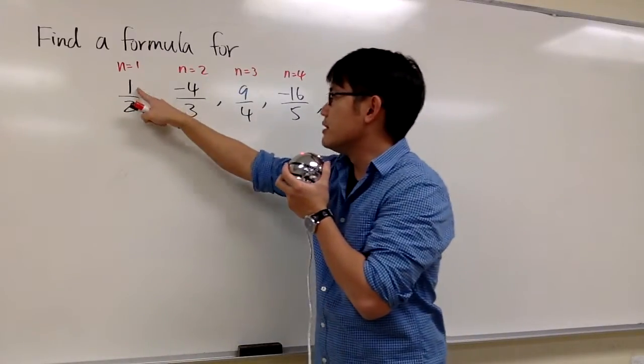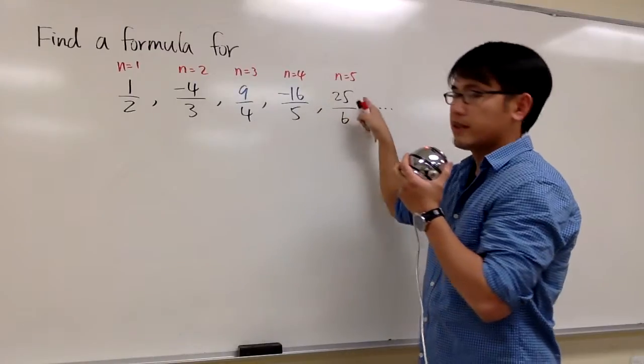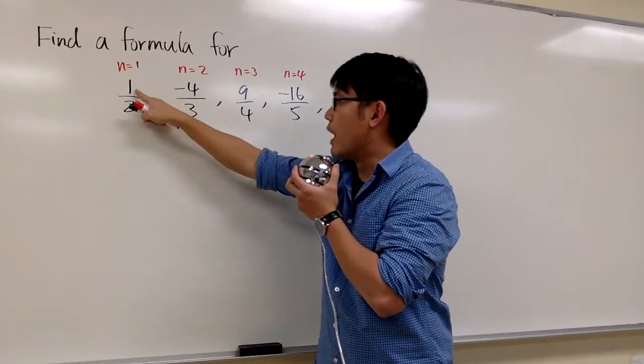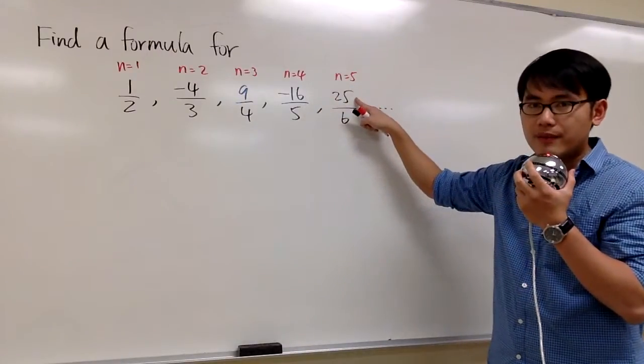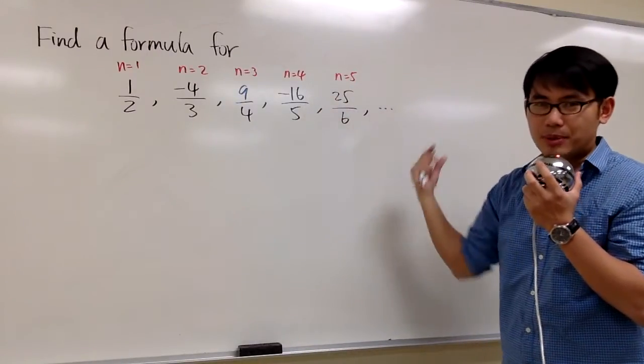How about let's just consider the numerators. Let's focus on the top numbers. The numerators are 1, 4, 9, 16, and 25. What are those numbers? They are just perfect squares.